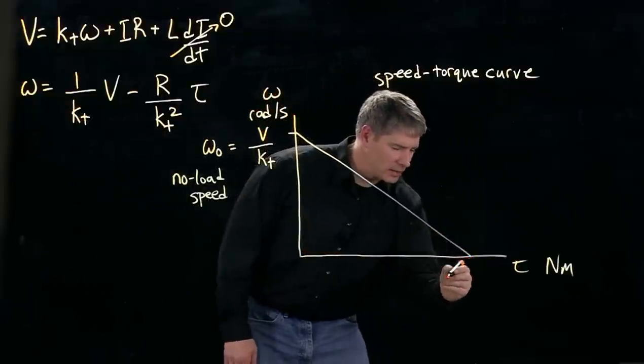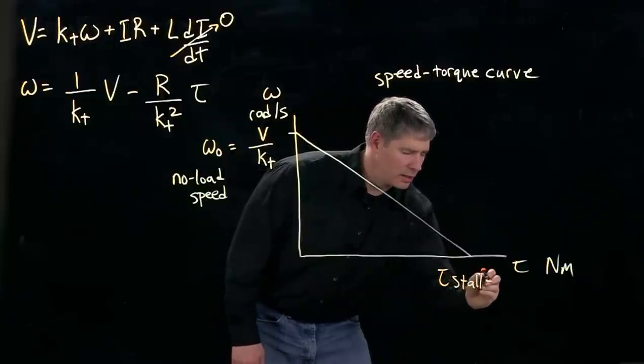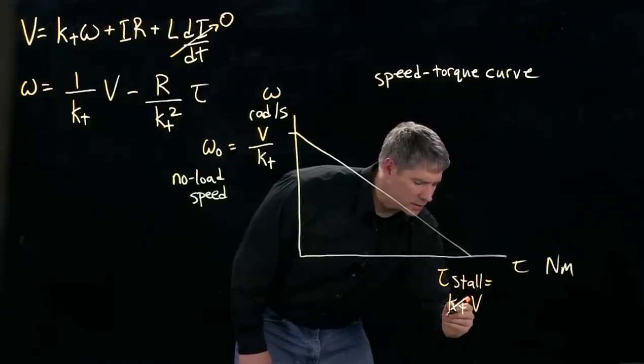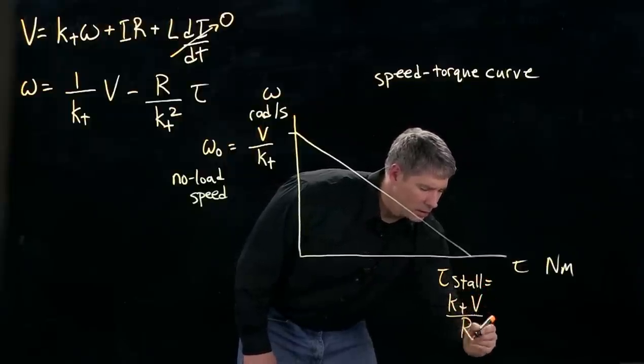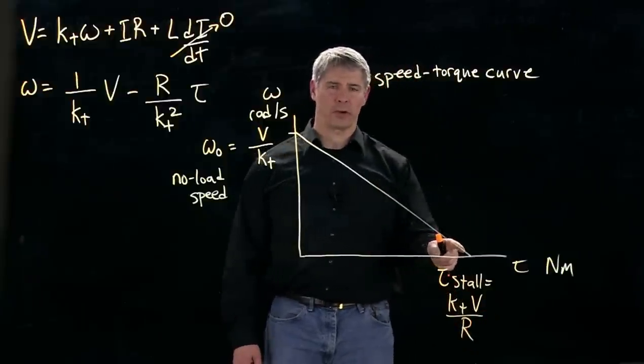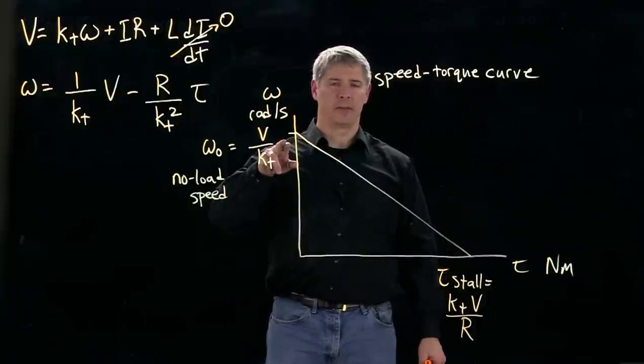So that means that we've got the stall torque here is equal to the torque constant times V over the resistance. So this is the maximum torque we can get out of our motor for the given voltage. This is the maximum speed we can get out of the motor.